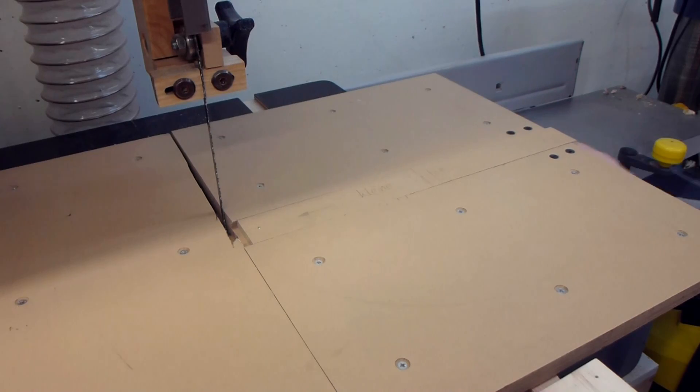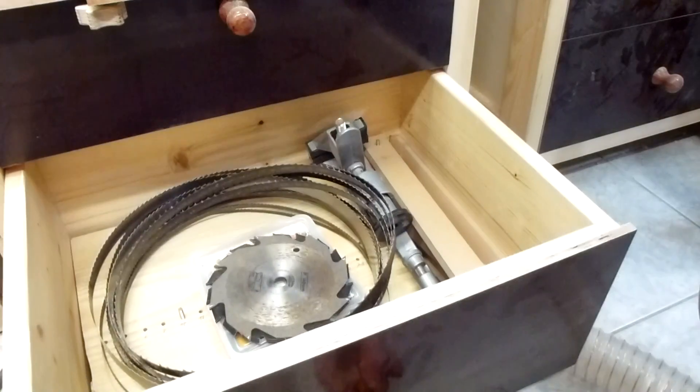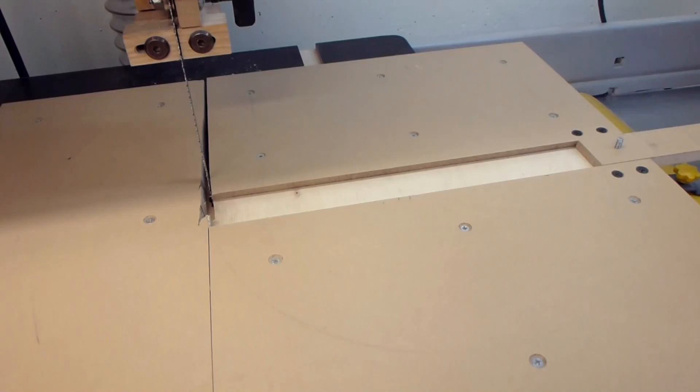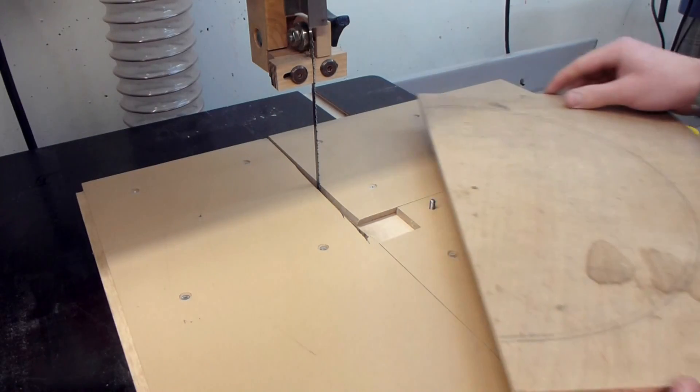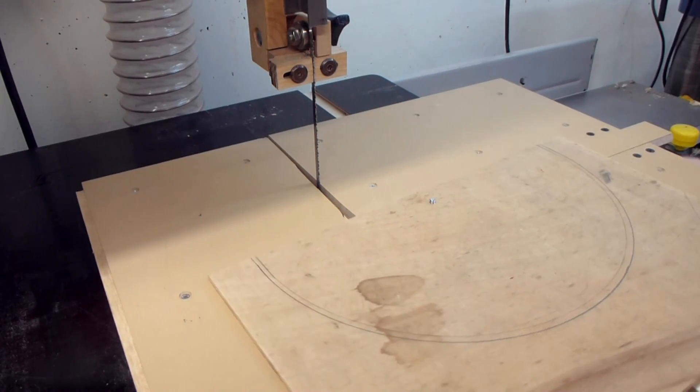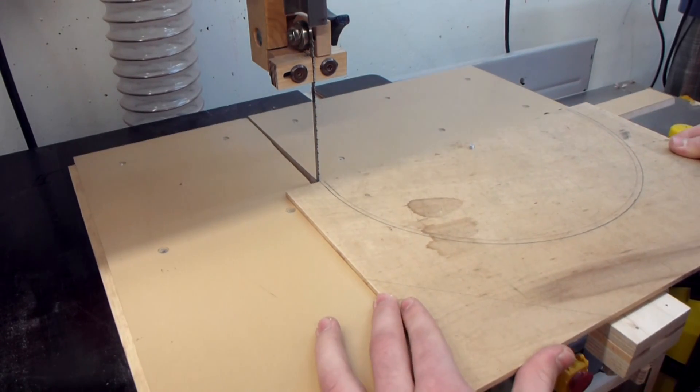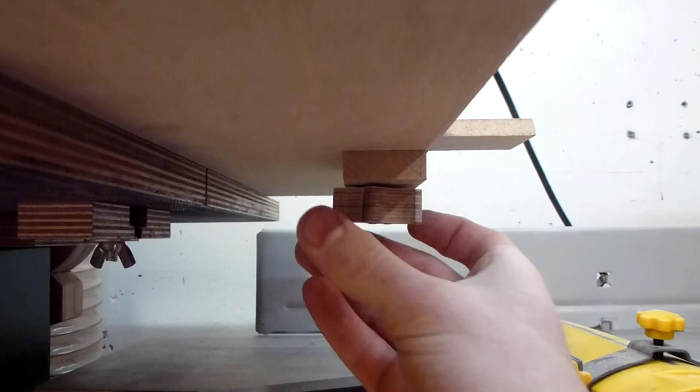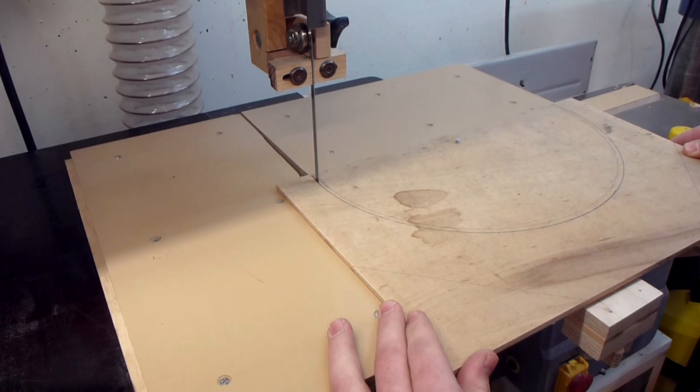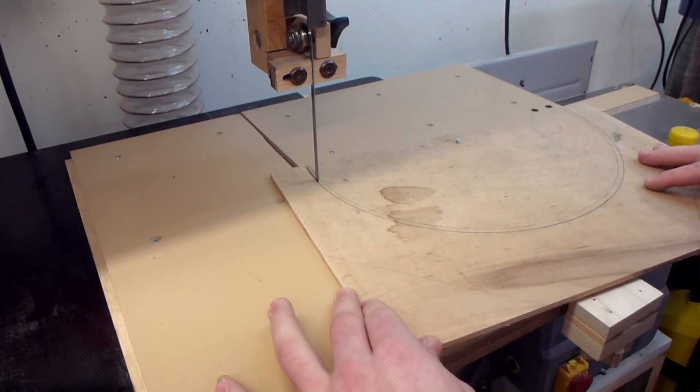I could have just cut it out freehand, but I decided to try my circle jig. So I put in the right insert, then adjusted it to the right radius and locked it in place. Cutting the arc is now really simple. I just have to slide the piece into the blade and then turn it.